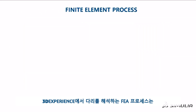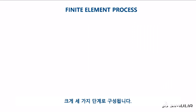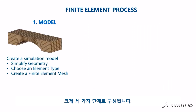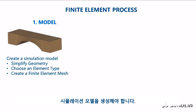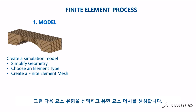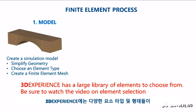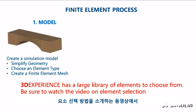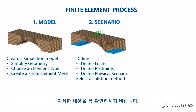In 3D experience, the finite element process for the bridge consists of three major steps. Starting with the design model, we create a simulation model. This often entails simplifying the geometry. Then we select the element type and create a finite element mesh. 3D experience has a large library of elements to choose from. Be sure to watch the video on element selection to learn more.